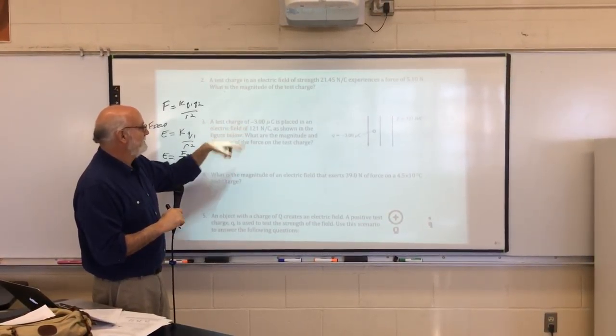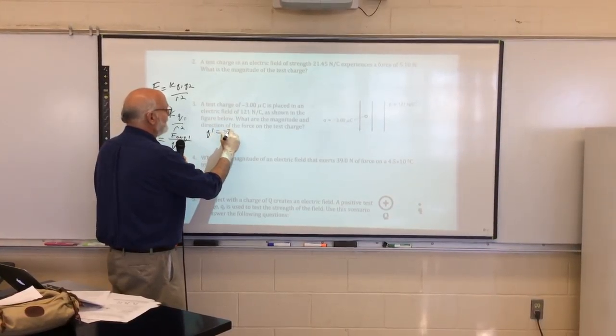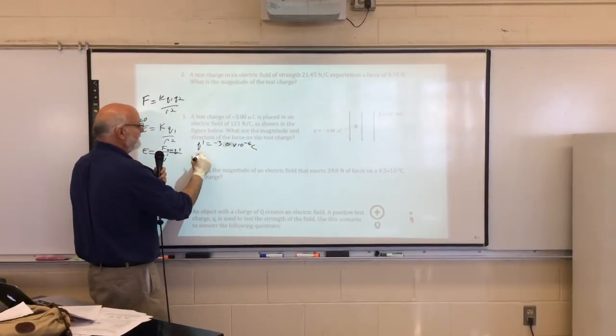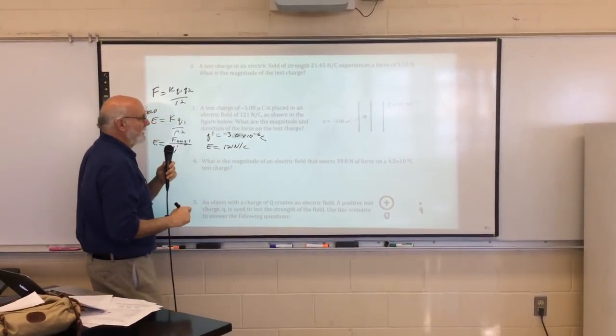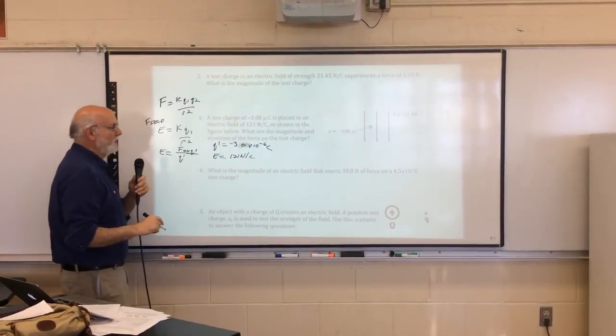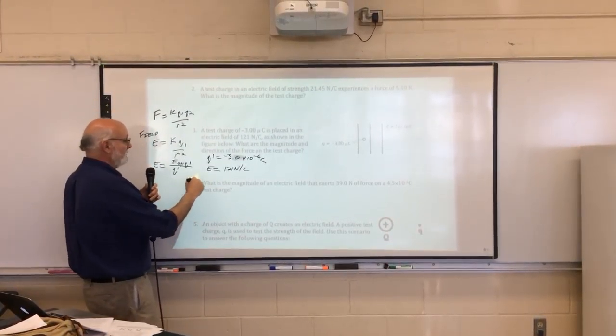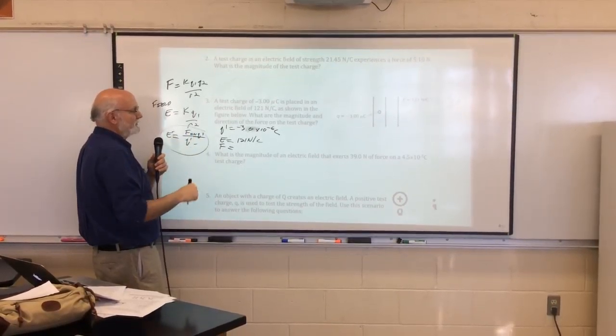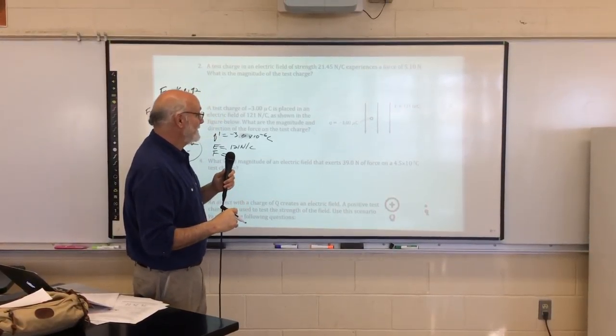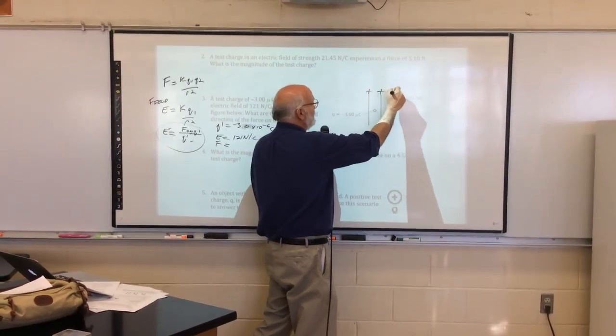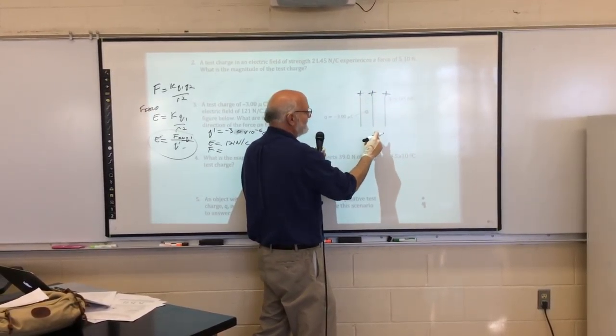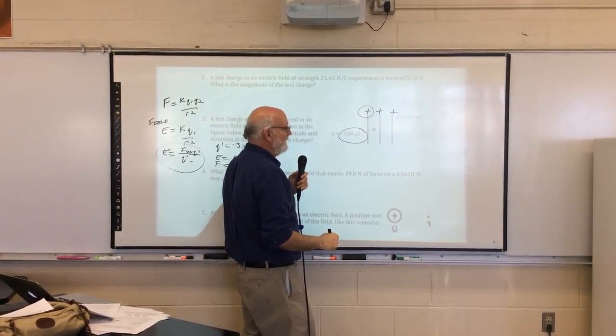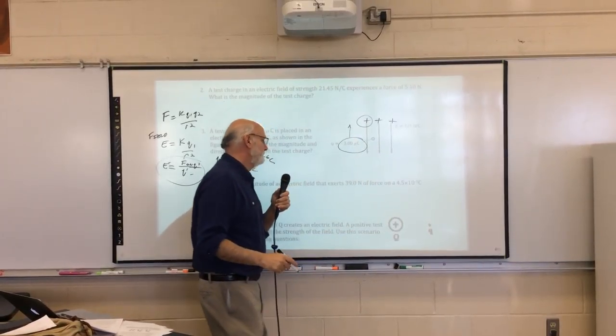A test charge, that's that Q prime, negative 3.00 times 10 to the negative 6 coulombs, placed in electric field, field E, 121 newtons per coulomb. It wants to know the magnitude and direction of the force. With this, we are trying to find the force. So once again, you've just got this guy, and you guys can do the work. You've got the Q, you've got the field, figure out the force. That's algebra one. Now, it also says what's the direction. Remember, fields always go, arrows, from positive to negative, from positive, so coming out of the positive. So now you go, I've got a negative charge, positive field in that direction, so which way is it going to go? Negative and positive attract, that sucker's going up.